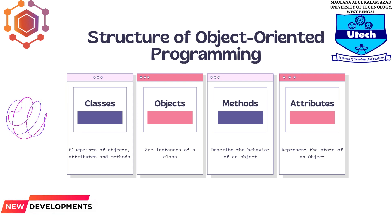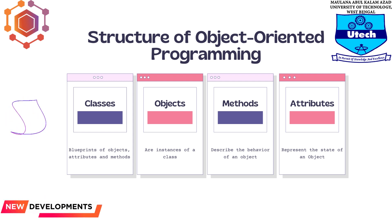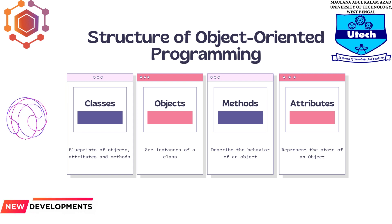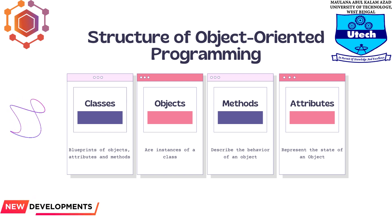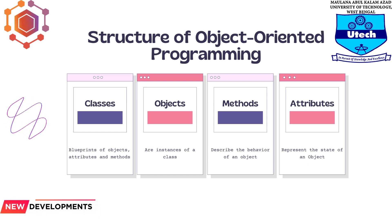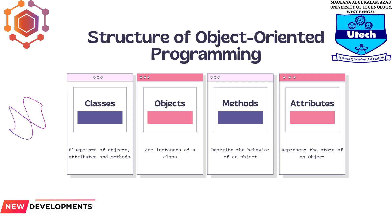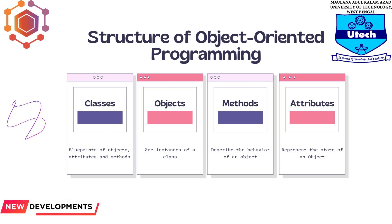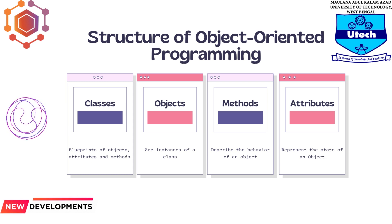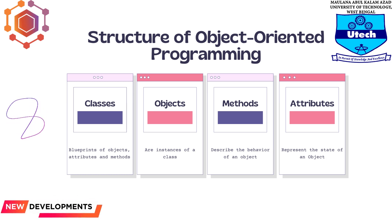Programmers use methods for reusability or to keep functionality encapsulated inside one object at a time. Attributes are defined in the class template and represent the state of an object. Objects will have data stored in the attributes field. Class attributes belong to the class itself.